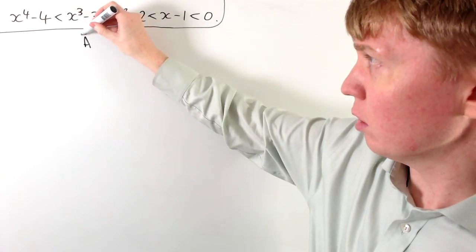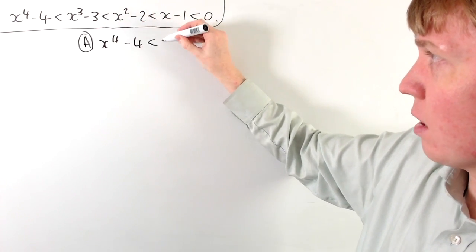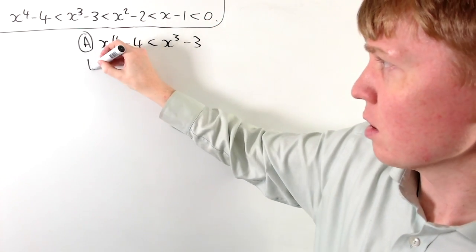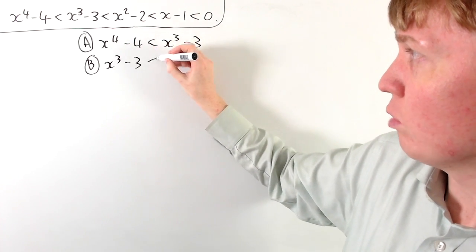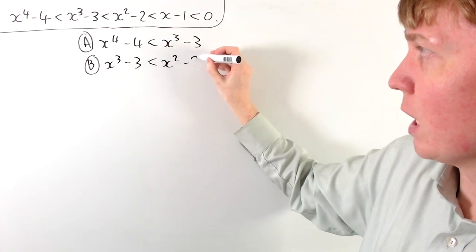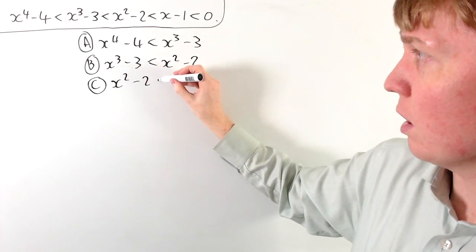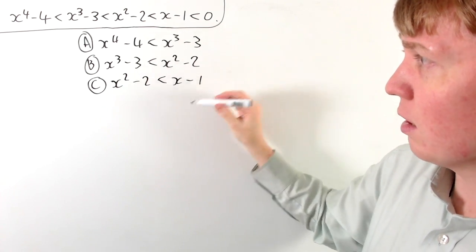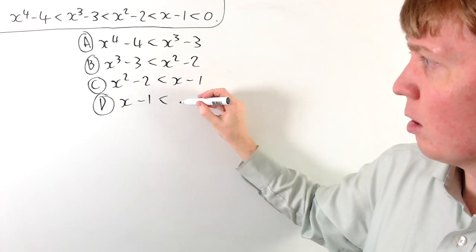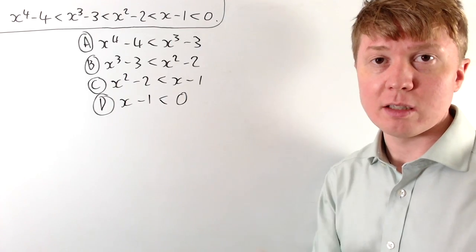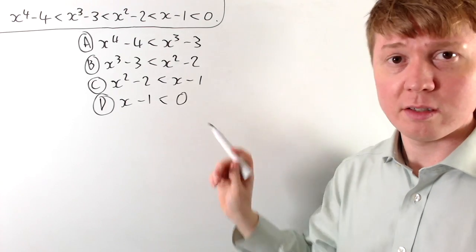So if we start to label them, we can call our first inequality A, where we need x to the 4 minus 4 to be less than x cubed minus 3. Similarly we can label our next inequality as B, where we need x cubed minus 3 to be less than x squared minus 2, and so on through C and D.